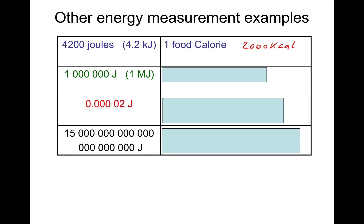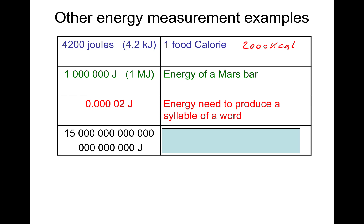A million joules then, a megajoule. Energy of a Mars bar. One Mars bar is a million joules of energy. What about 0.00002 joules? That is the energy needed to produce a syllable of a word. I've got no idea how they calculated that. And then we've got 15 with several zeros. That's the energy received by the Earth from the Sun in one day. That's a lot of Mars bars.